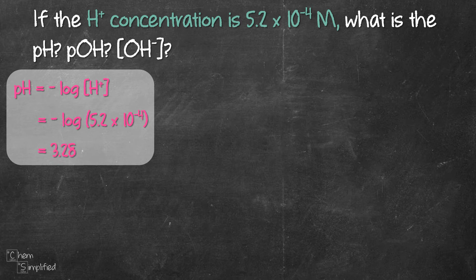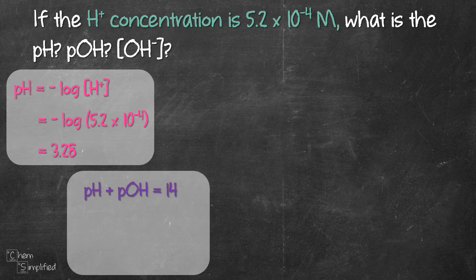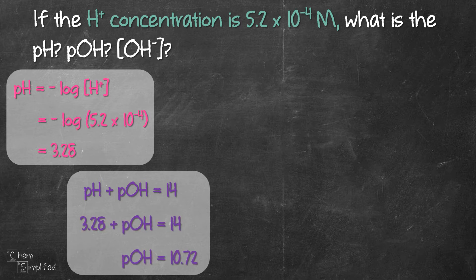Now from this calculated pH, we can then easily find the pOH. We use this relationship formula where pH plus pOH equals 14. Plug in the value for pH, subtract them, and we get 10.72.